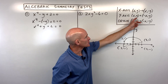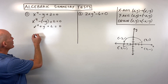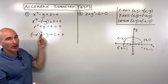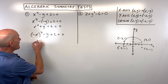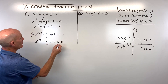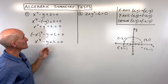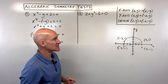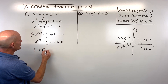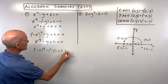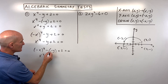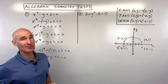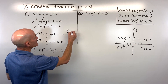Now let's look at y-axis symmetry by replacing x with negative x. When you have a negative to an even power — a negative times a negative times a negative times a negative — you get a positive x to the fourth. This does match the original, so it has y-axis symmetry. Testing for origin, we replace both x with negative x and y with negative y. Simplifying gives a result that does not match the original, so it doesn't have origin symmetry. In this case, we just had y-axis symmetry.